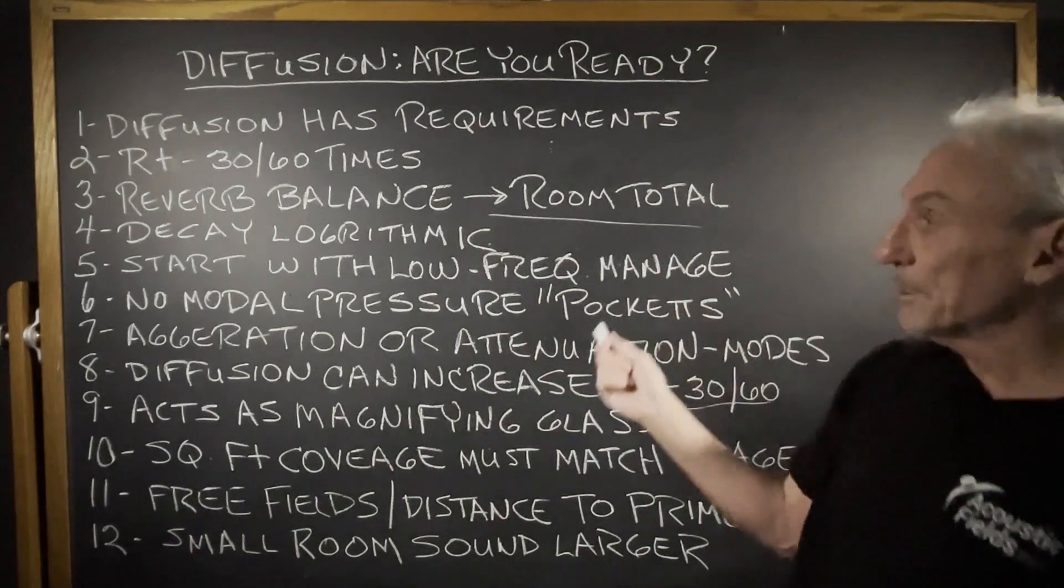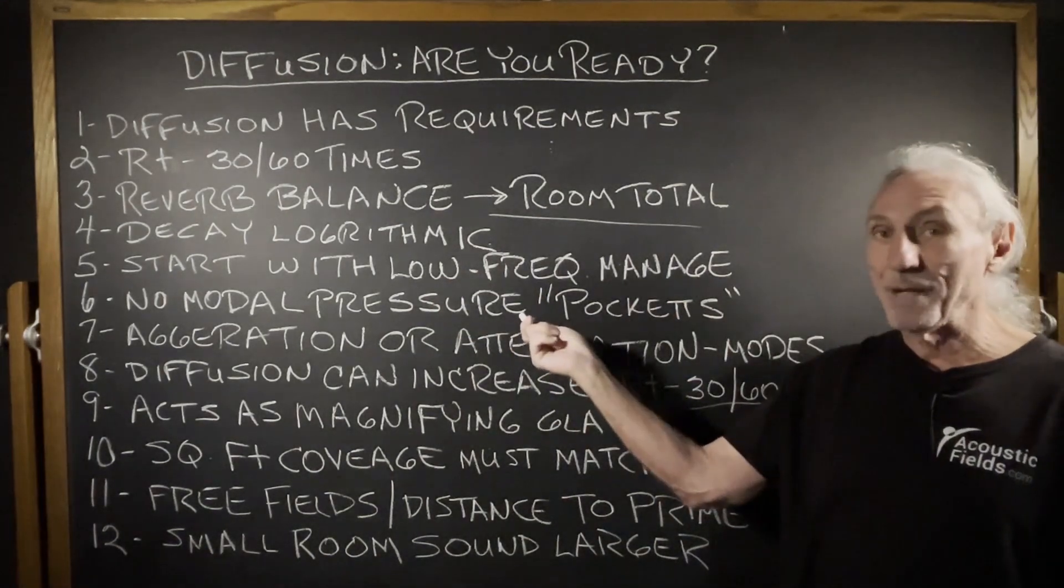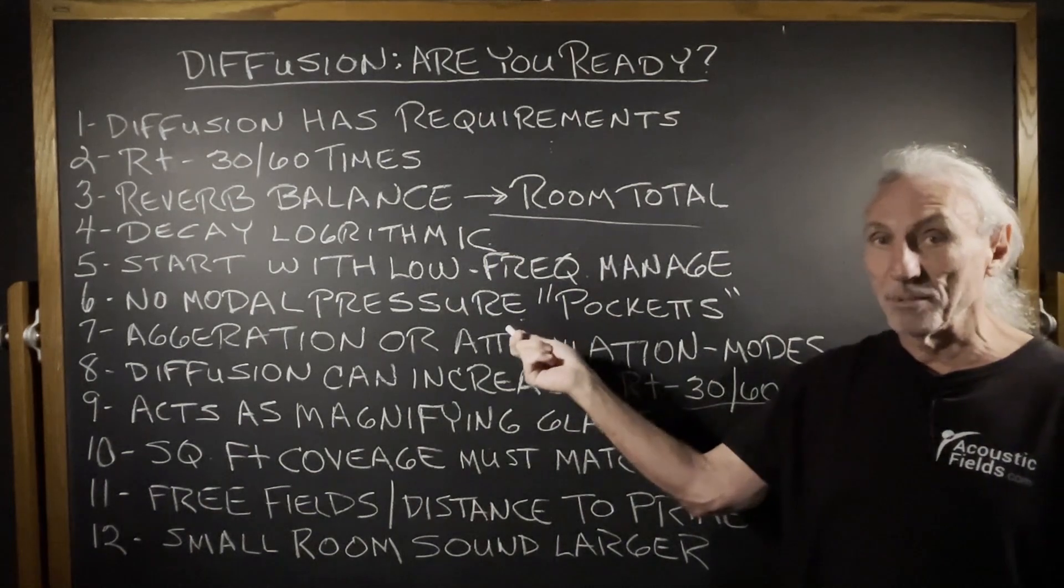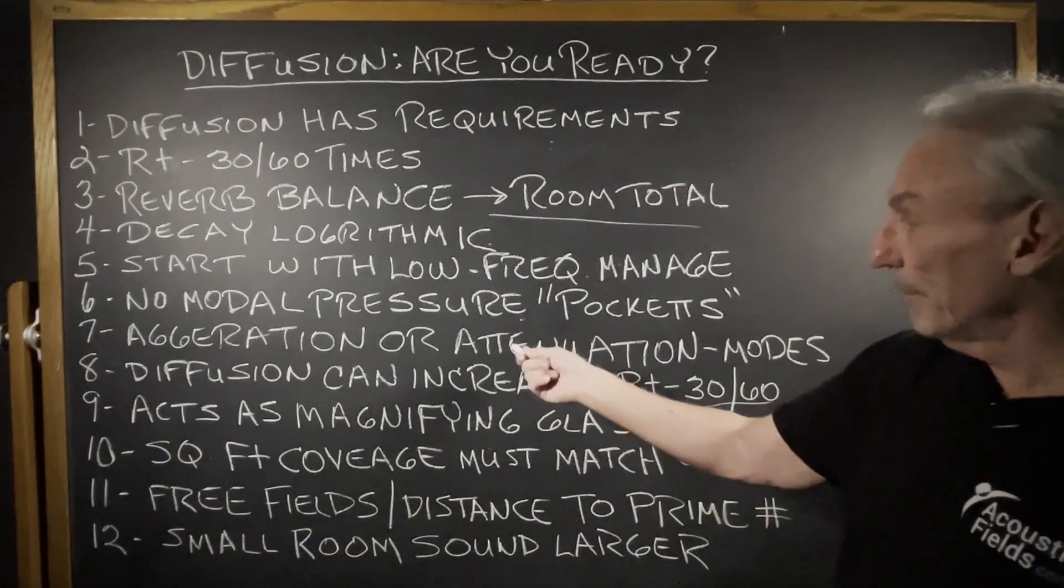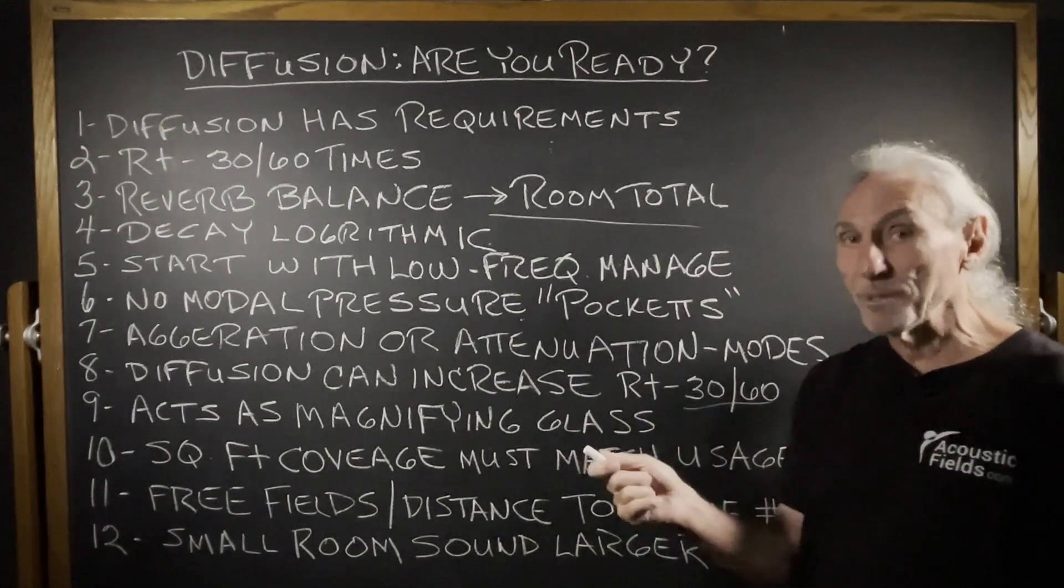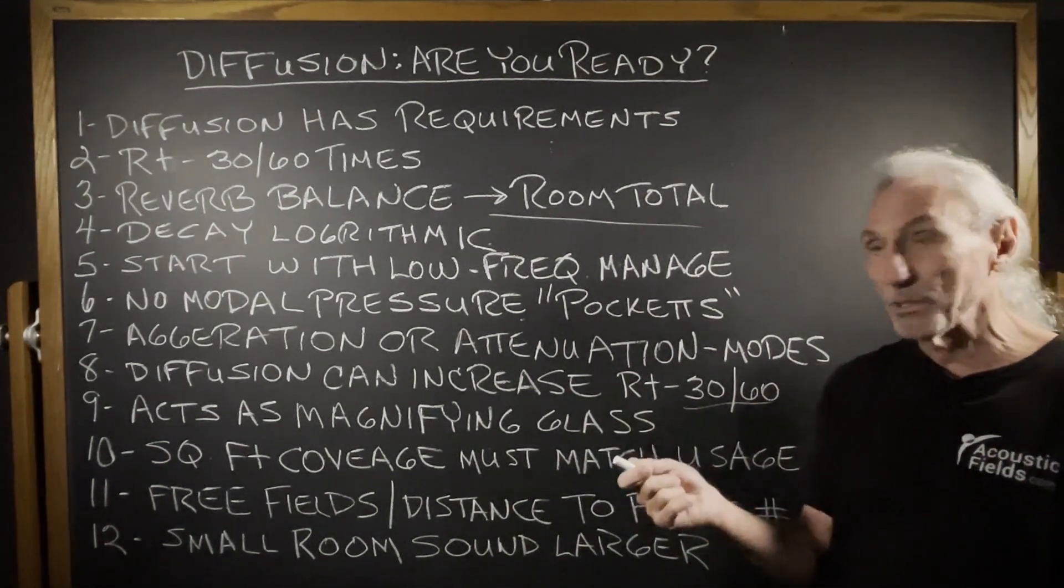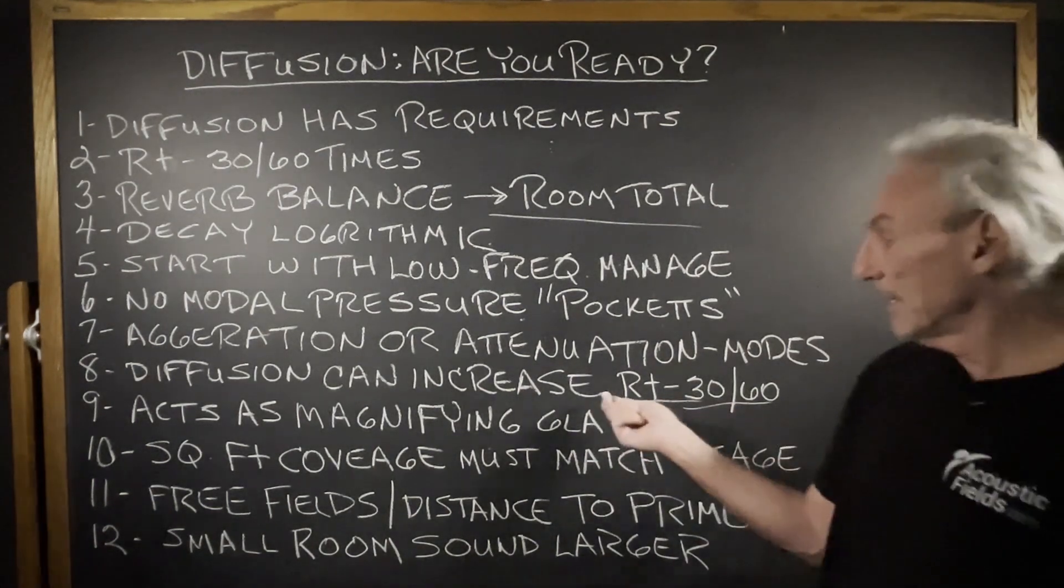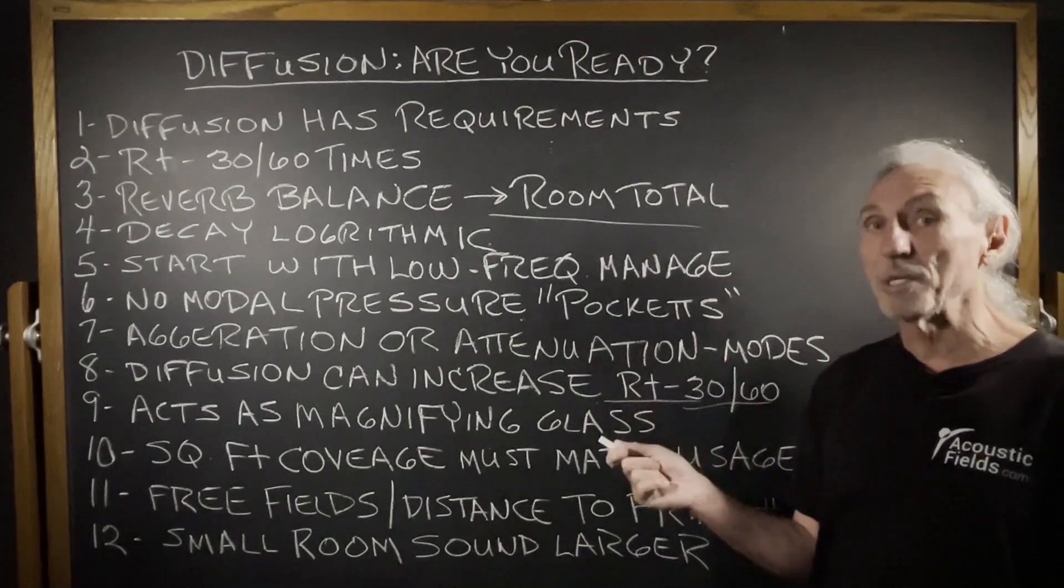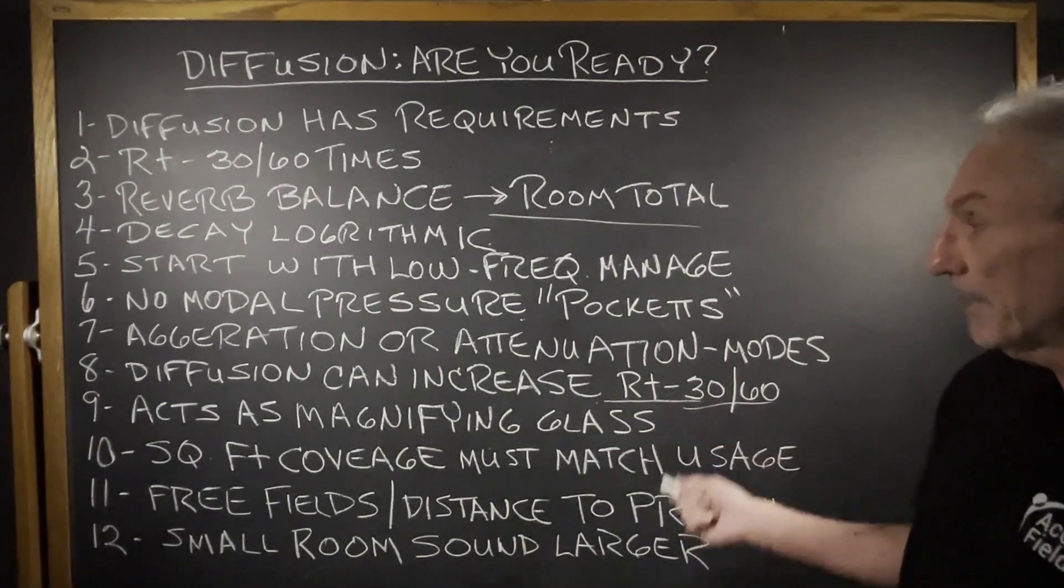We have to start with low frequency management. We can't have any pressure pockets in the room especially close to the diffusion. We can't exaggerate or attenuate any frequency range. This is the modal issue problem. And we have to be careful because diffusion can actually increase our reverb times in the room. So we want to be really careful.